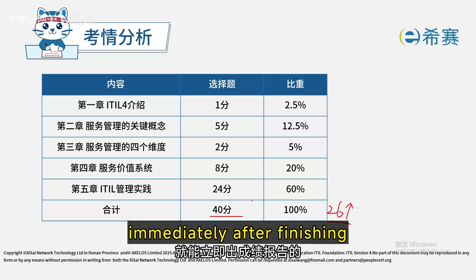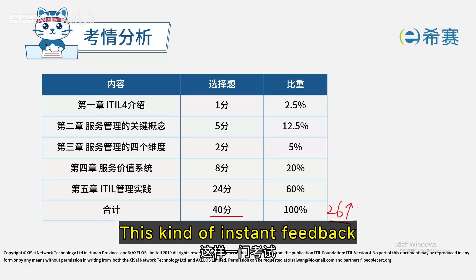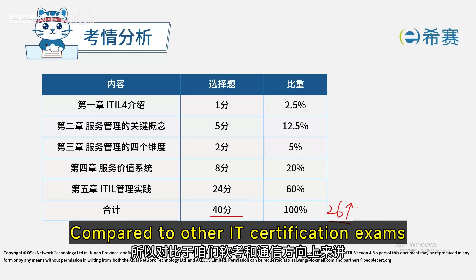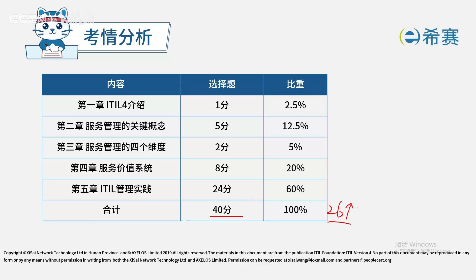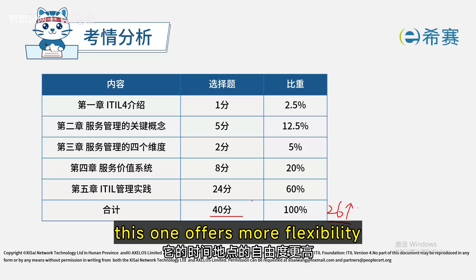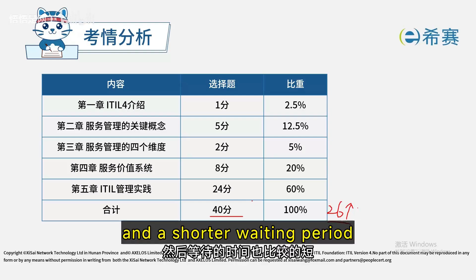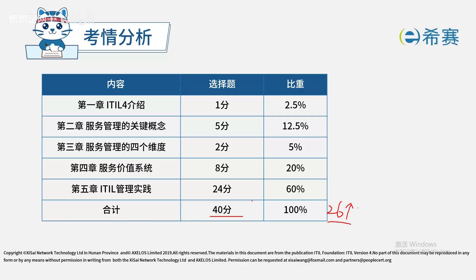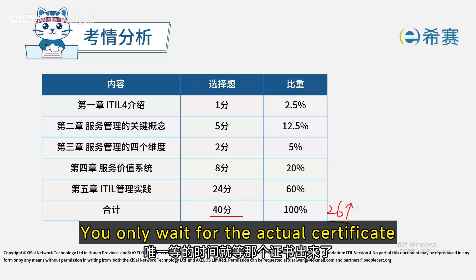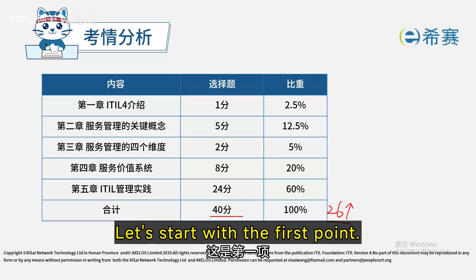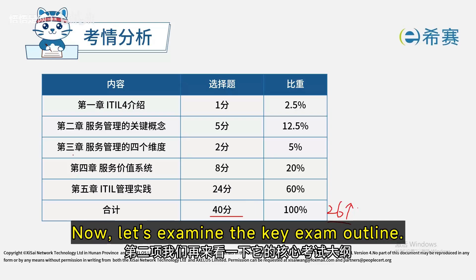If you score 26 or higher out of 40, you've passed. You'll receive your score report instantly as soon as you're done. Compared to software certification and telecom exams, this one is more flexible in terms of time and place, and the waiting time is short — the only wait is for your physical certificate to arrive.